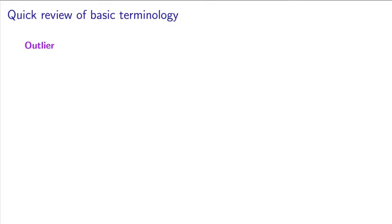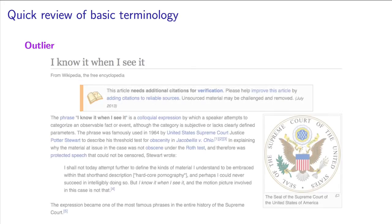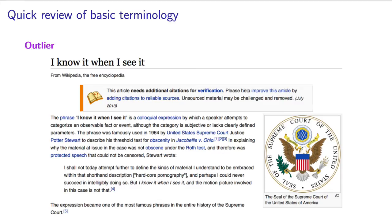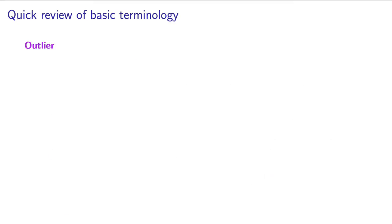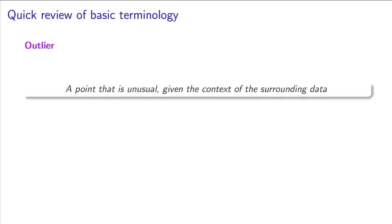There's a bit more new terminology in this video — three more terms to go. The first is the concept of an outlier. There isn't a particular way to test for an outlier or define it. Paraphrasing the words of a US Supreme Court judge, you know one when you see one. The best way to define an outlier is to state it as being a point that is unusual given the context of the surrounding data.